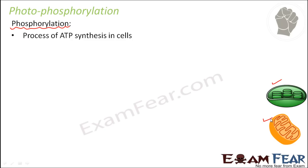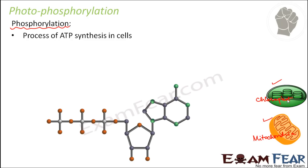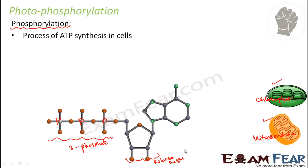Mitochondria and chloroplasts are the organelles where ATP synthesis takes place in a cell. ATP is adenosine triphosphate. Here you can see the three phosphate groups — these white silver colored molecules are nothing but phosphate groups. So that is why it is called triphosphate — it has three phosphate groups.